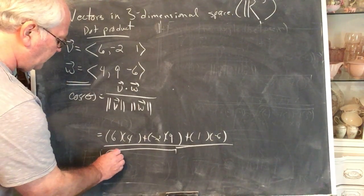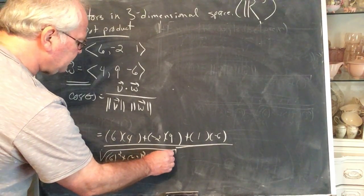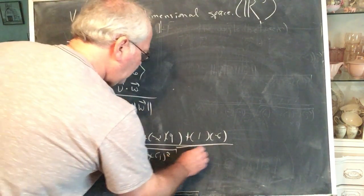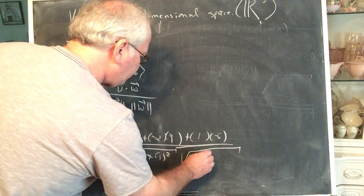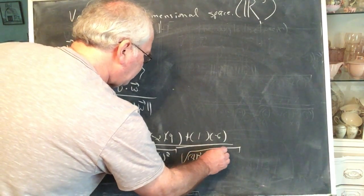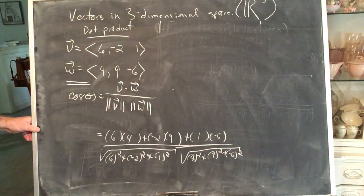So that's six squared plus negative two squared plus one squared. And then we have a big number. Four squared plus nine squared plus negative six squared.